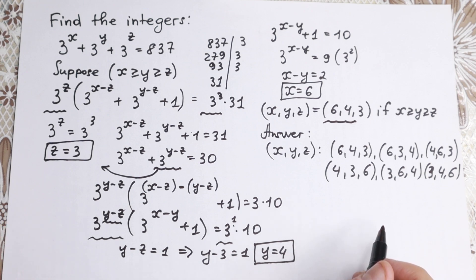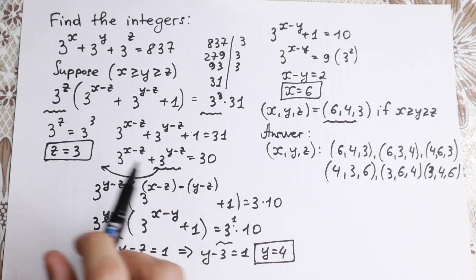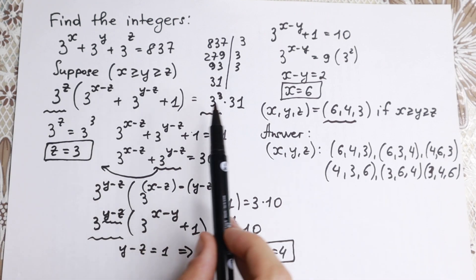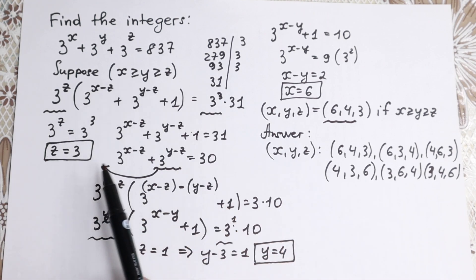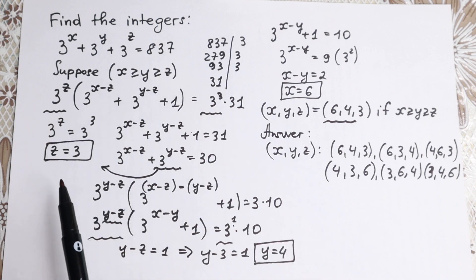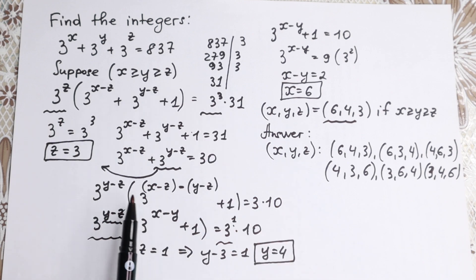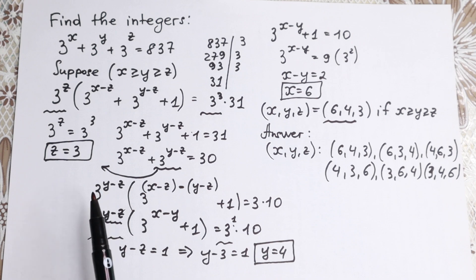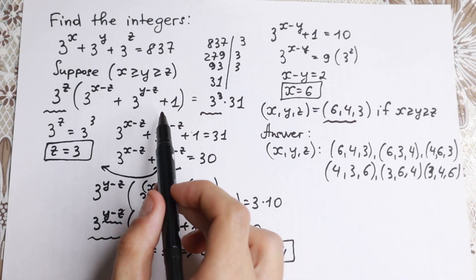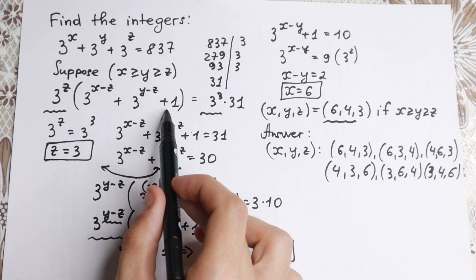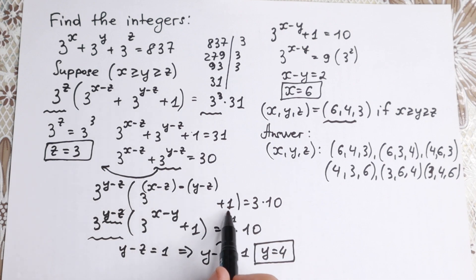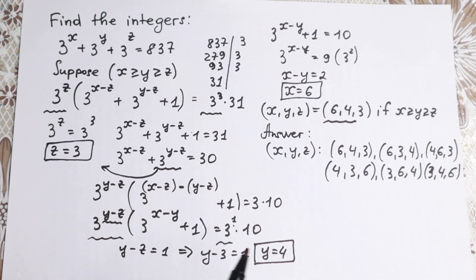To summarize the main tricks: first, we factored out 3 to the z and found z quickly by matching 3 cubed. Second, we factored by 3 to the power y minus z and matched the right-hand side. This gave us y, and then x followed directly. I hope you understand this explanation.